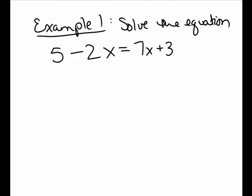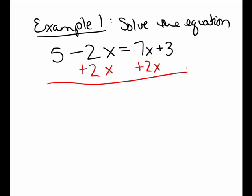Let's do an example. I'm going to solve the equation 5 minus 2x equals 7x plus 3. The left side is simplified and the right side is simplified. So I'm going to go ahead and do additions and subtractions to gather together all the x terms on one side and the constant terms on the left side.